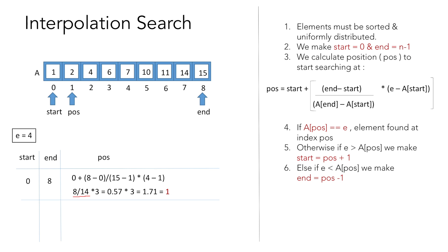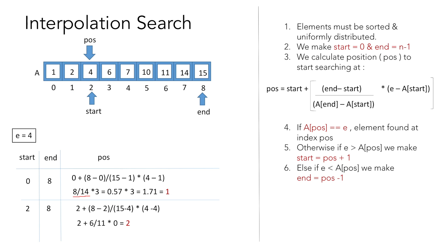We check the value at index 1, which is 2, and that is not equal to 4. As 4 is greater than 2, we make start equal to current position plus 1, so start is now index 2, and end remains 8. We again calculate position using the formula: 2 + (8 - 2) / (15 - 4) * (4 - 4), which equals 2 + 6/11 * 0, giving position 2. We check index 2 and find the element 4, which is the element we were looking for, so we found element 4 at index 2.